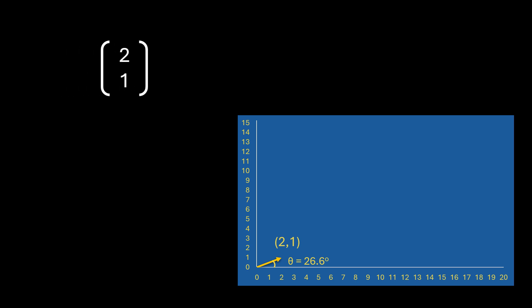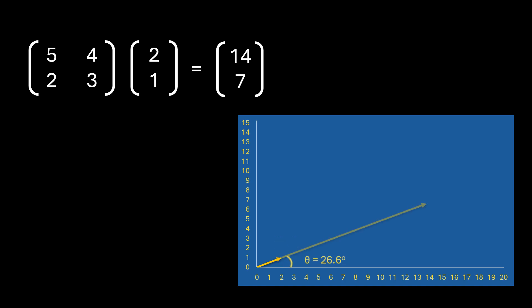Now let's say I have another matrix [5, 4; 2, 3] and I multiply this matrix with the vector. The resultant vector will be [14, 7], and if I plot this new vector [14, 7] it will look like this. Its length has increased.